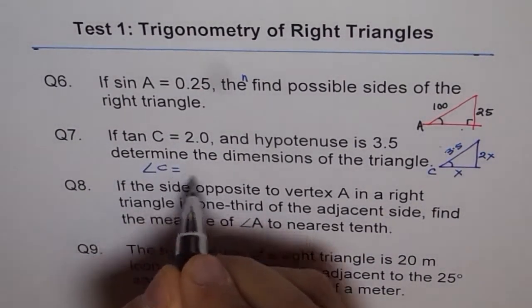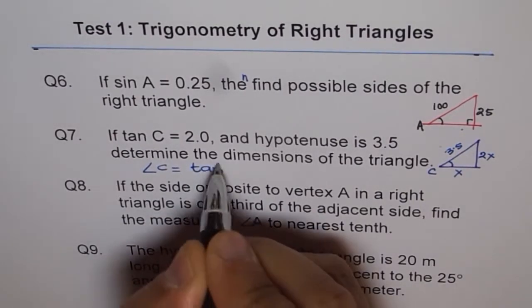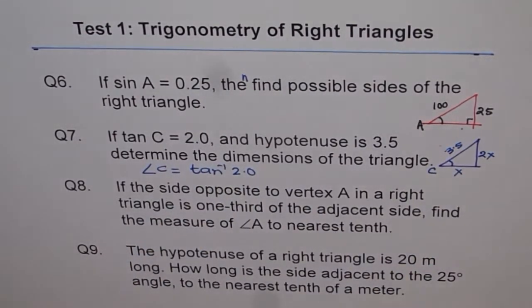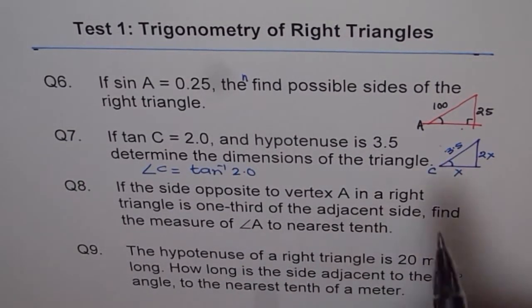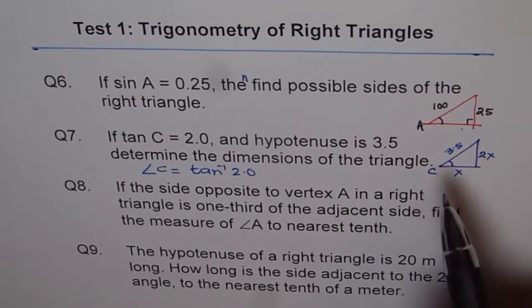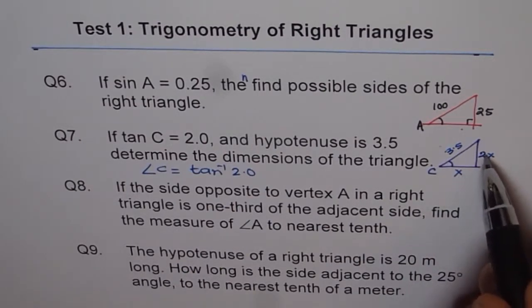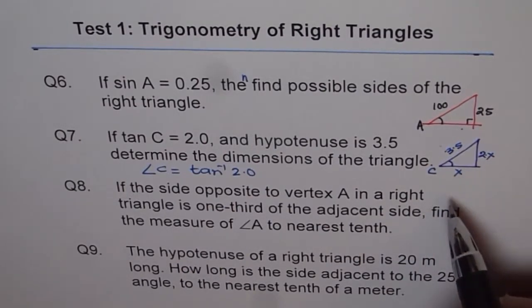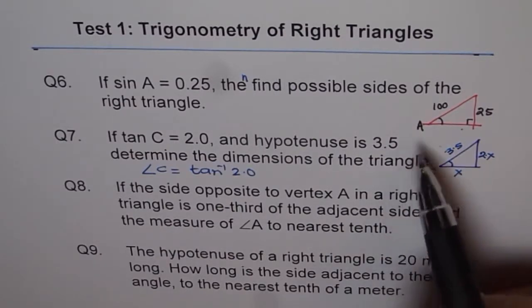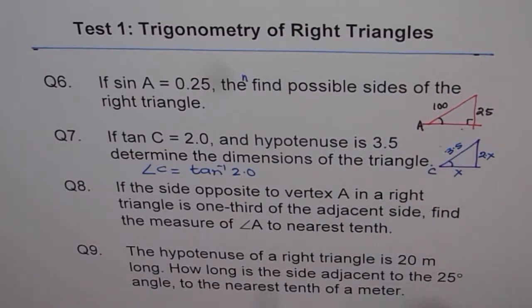Once we get angle C and we know the hypotenuse is 3.5, then we can use sine and cosine to find opposite and the adjacent side. That is the way which you are expected to do for right triangles using trigonometry. Apply the second strategy to solve question 8.